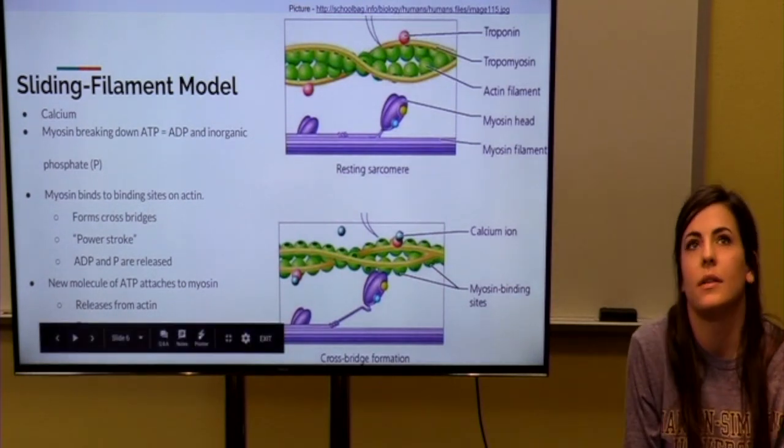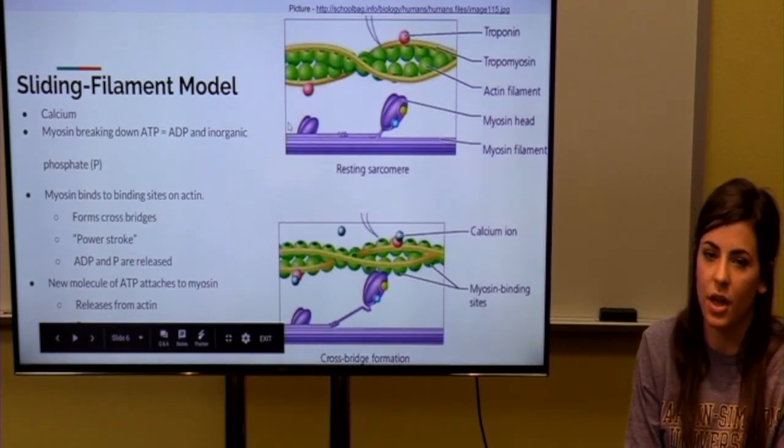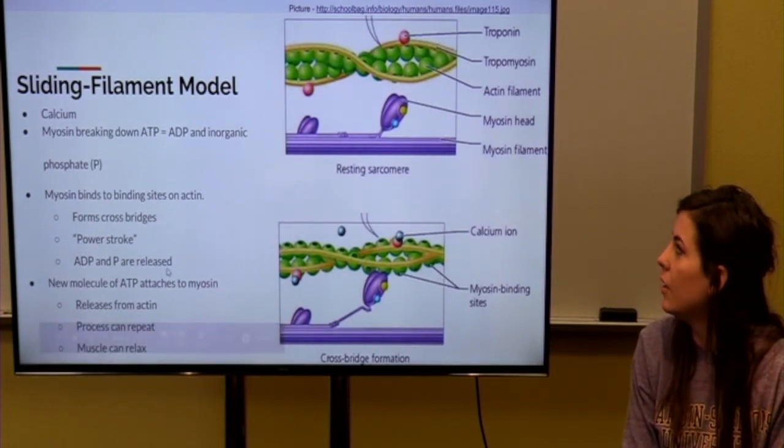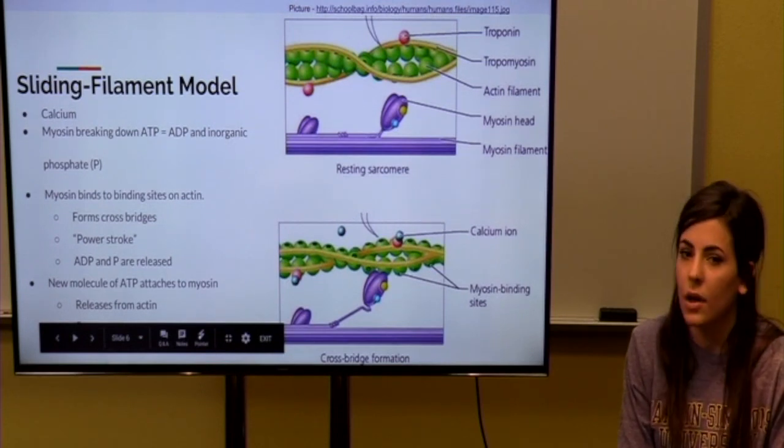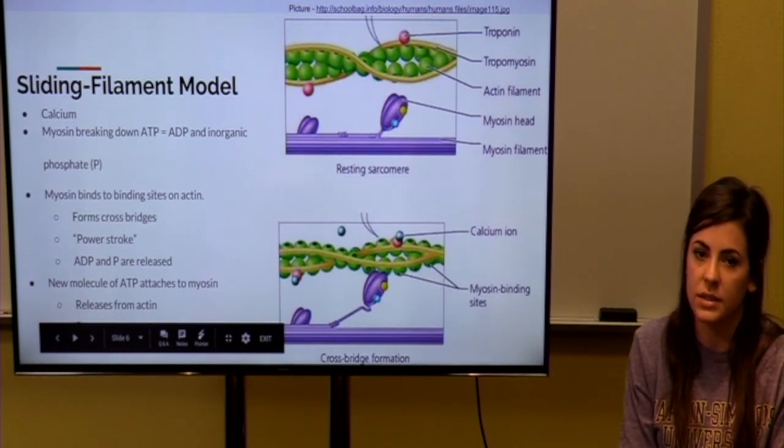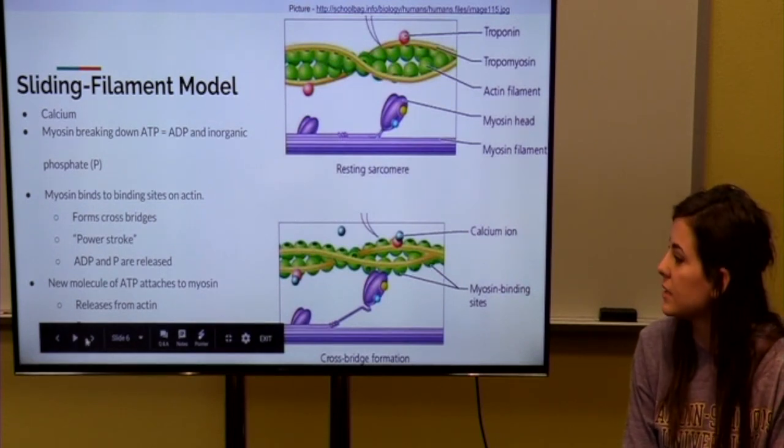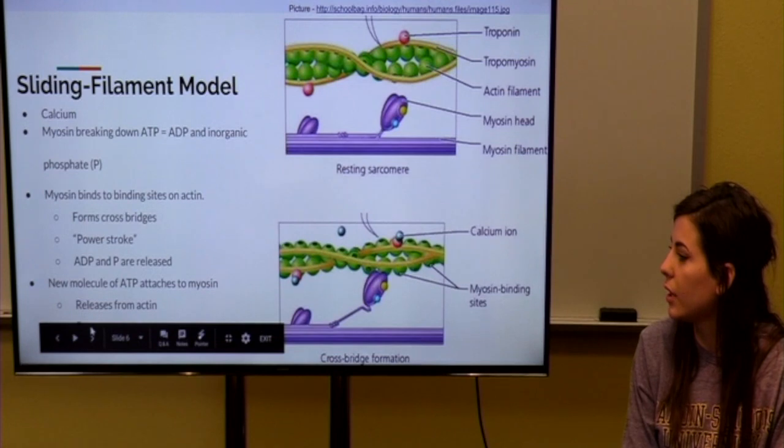So, the myosin head stays attached to the actin until a new molecule of ATP reattaches to the myosin head. And once the ATP reattaches, the myosin head releases the actin and the process can either repeat or relax.